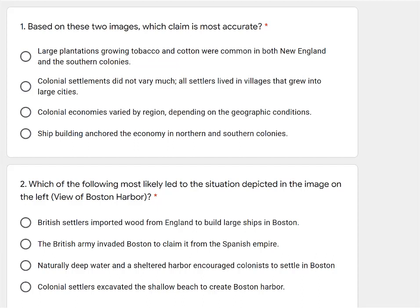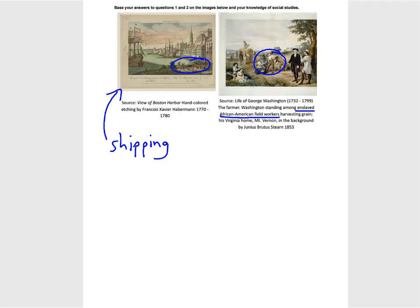Choice two: colonial settlements did not vary much — all settlers lived in villages that grew into large cities. Go back to the pictures: you have an urban setting on the left and a rural setting on the right. So it's obvious that not everything becomes urban, and our lifestyle today shows us there are still rural areas.